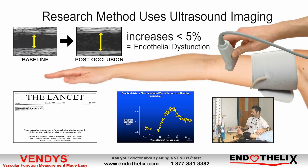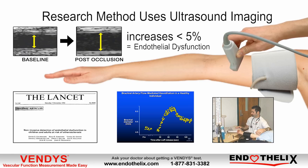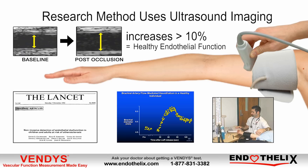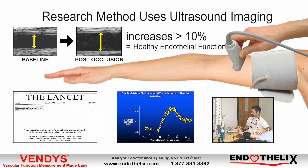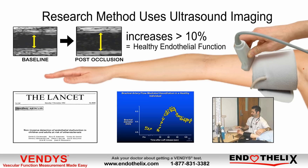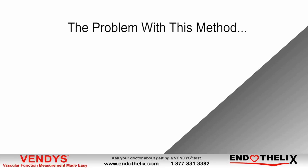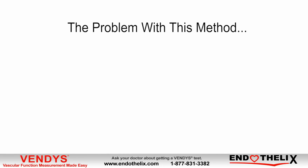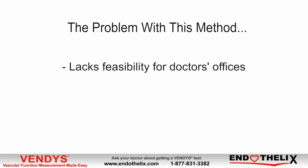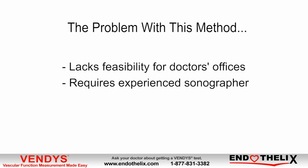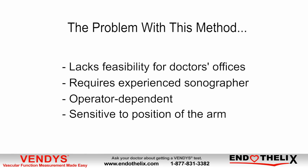If the brachial artery diameter increases less than five percent, it indicates endothelial dysfunction and a sign of cardiovascular disease. However, if the brachial artery diameter increases more than ten percent, it is a clear indication of healthy endothelial function. Although this discovery was a major step forward and a useful tool for research laboratories, it lacks feasibility for clinical practice in doctors' offices, mainly because it requires high-resolution ultrasound imaging and a very experienced sonographer. Additionally, this technique is very operator dependent and sensitive to arm position, which often creates inconsistent results and unacceptable variations.